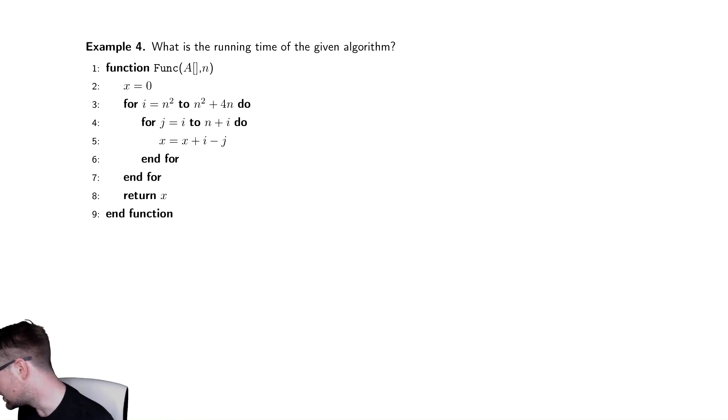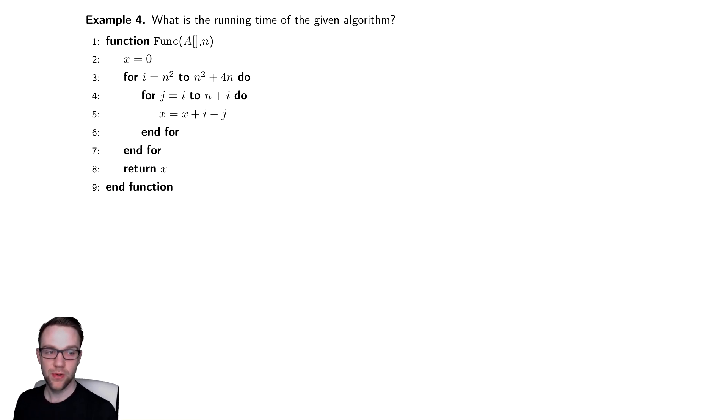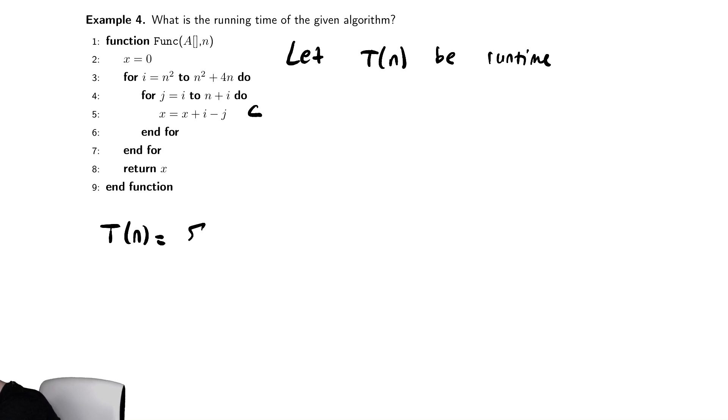So what we're actually going to do is this Example 4 for our next example. Just like we've done in the past, we're going to let T(n) be the runtime. And since the innermost line of code there is just basic arithmetic, we're assuming it takes constant time. We're then going to express T(n) as summations. So T(n) is equal to the sum i equals n squared to n squared plus 4n of the sum from j equals i to n plus i of c.